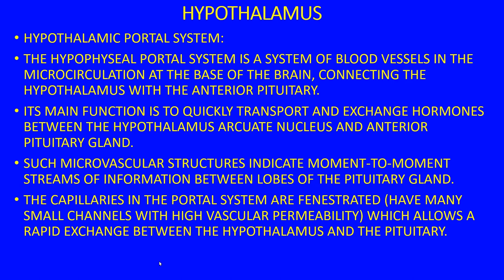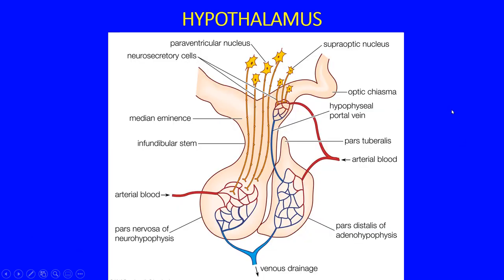The primary capillary bed is in the median eminence area; the supraoptic and other nuclei synapse down onto the capillaries, which travel down to the secondary capillary bed in the anterior pituitary. Pars distalis refers to the anterior pituitary (more glandular); pars nervosa refers to the posterior pituitary (more neuronal).